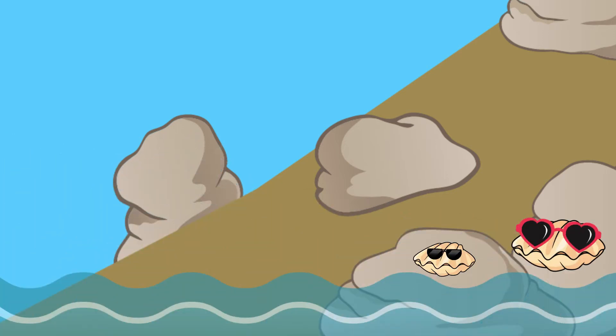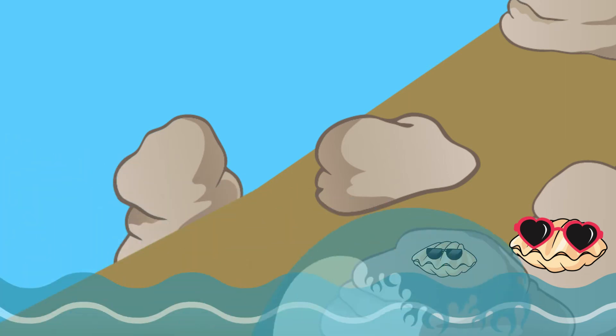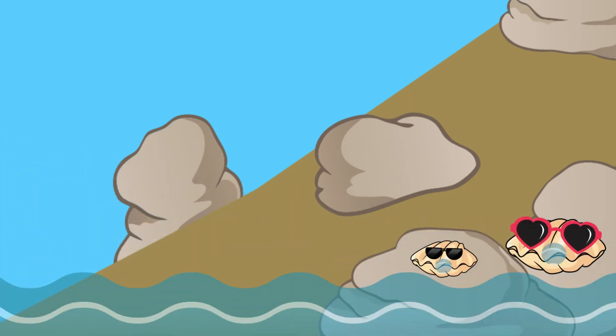Bivalves, such as clams and mussels, will bring water into their shell and body and close up nice and tight when the tide is low and they are not submerged in water.